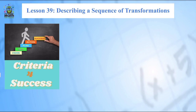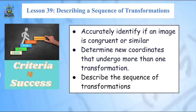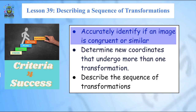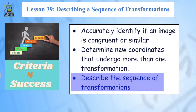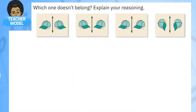Welcome to lesson 39. In this lesson we're going to describe a sequence of transformations. There are four things to look out for — the same things we looked at in lesson 38: how to identify if the image is congruent or similar based on size, how to find new coordinates especially when more than one transformation has happened, and how to describe that series of transformations.